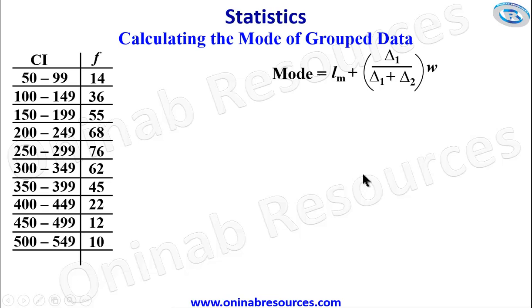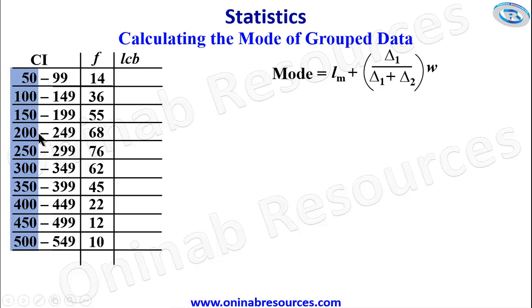So we are going to create an additional column to the table to accommodate the lower class boundary. We have additional column as lower class boundary. And we're going to make use of only the lower limits of the respective class intervals. So we make use of these lower limits. This is the upper limits.